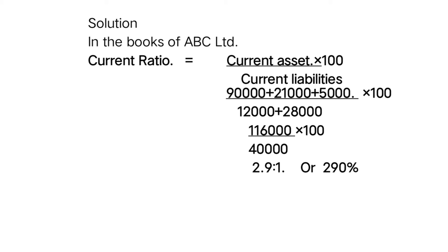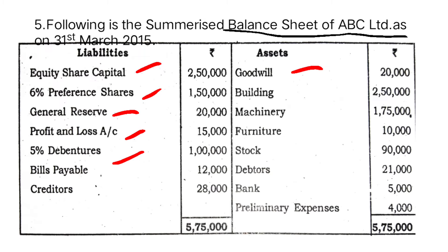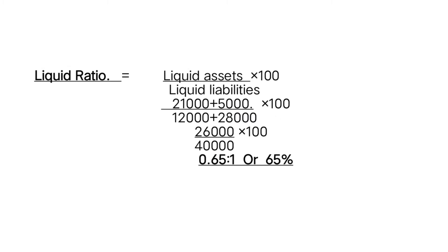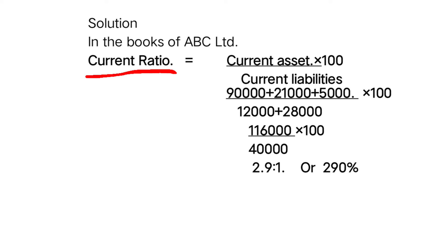Current ratio formula: current assets divided by current liabilities. Current assets are stock ninety thousand, debtors twenty-one thousand, bank five thousand — total one lakh sixteen thousand. Current liabilities are bills payable twelve thousand and creditors twenty-eight thousand — total forty thousand. So current ratio is one lakh sixteen thousand divided by forty thousand, which gives 2.90:1 or 290 percent.